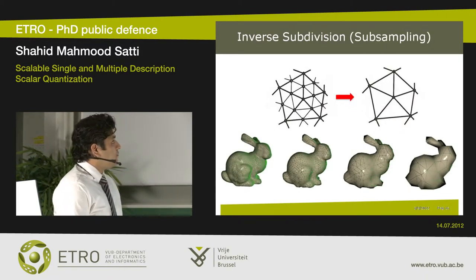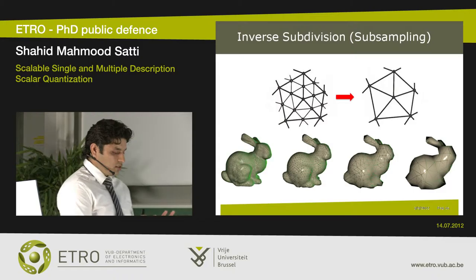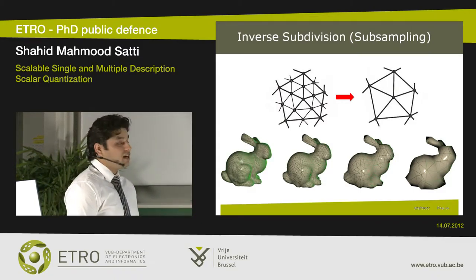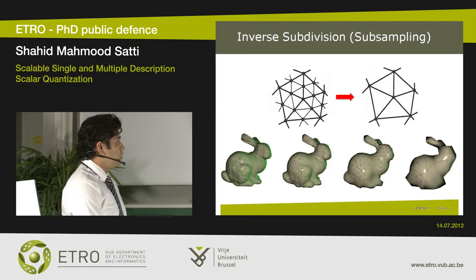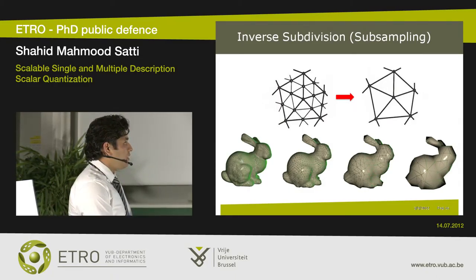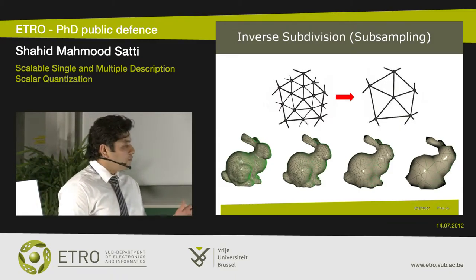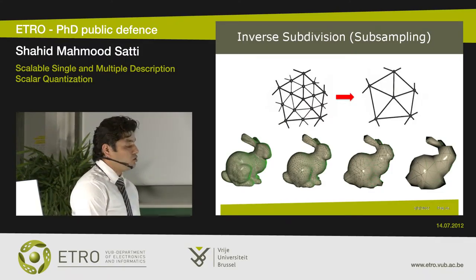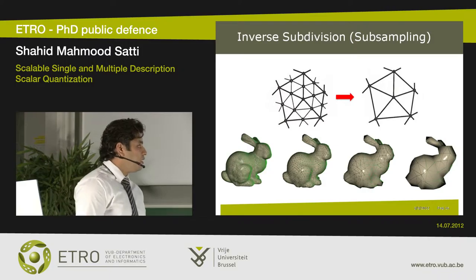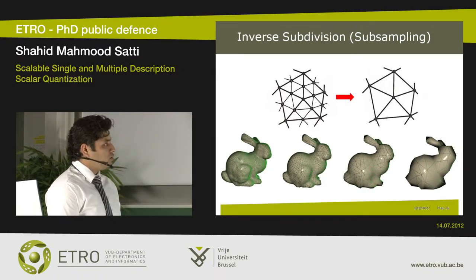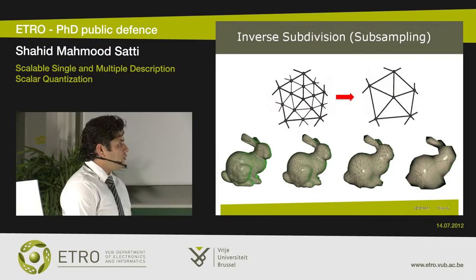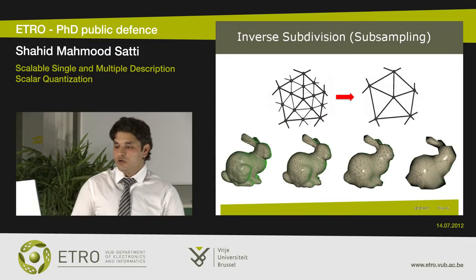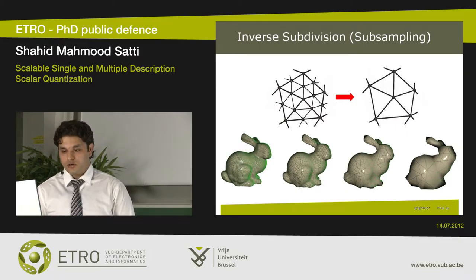Subsampling is the inverse process of subdivision, going from a fine mesh to a coarse mesh. We first identify the vertices we want to throw away — in each main triangle we identify three such vertices — and then we physically remove these vertices and their associated edges. As shown on this bunny mesh, we can throw away a lot of information and still keep the geometry, though throwing away more information introduces more distortion.